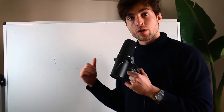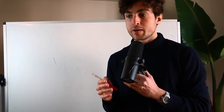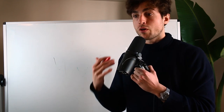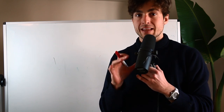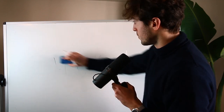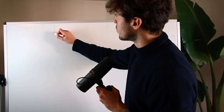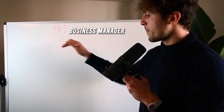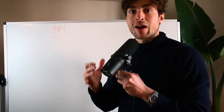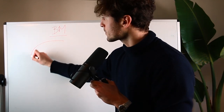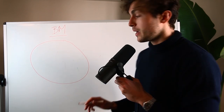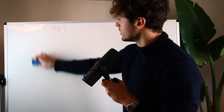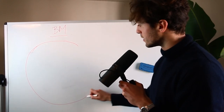Here we are on my whiteboard. I'm going to explain the architecture, because I truly believe that's the most important thing you need to understand. Once you've understood the architecture, everything becomes so easy. The first thing you need to understand is we need to create our business manager. The way I'm going to explain this is using the village analogy. The business manager is your village — your empire.